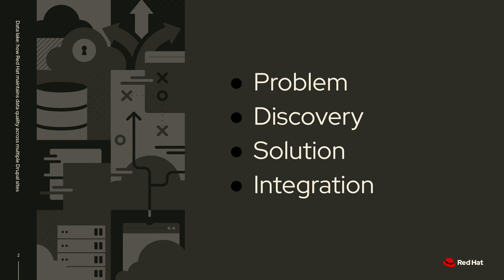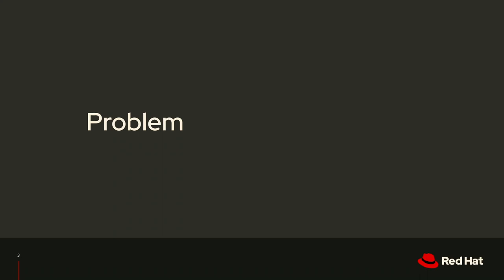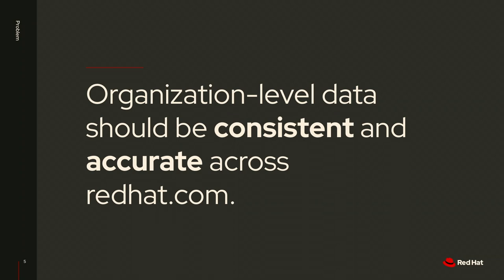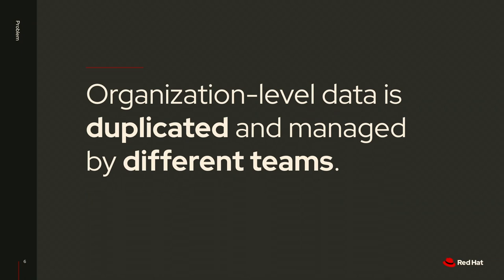We're going to talk about the problem we were trying to solve, the discovery process that led to our solution, and some examples of how we're integrating with the data lake at Red Hat. So first, the problem: redhat.com is built on multiple Drupal sites, and we have some single page apps like React and Vue. We also have organization-level data that should be consistent and accurate across all of redhat.com — product information, taxonomies, that sort of thing. Right now, because we have all these multiple different sites and applications, this data is duplicated and managed by different teams.